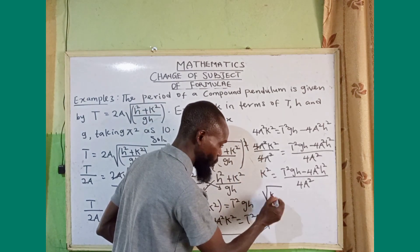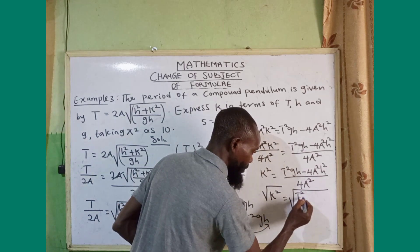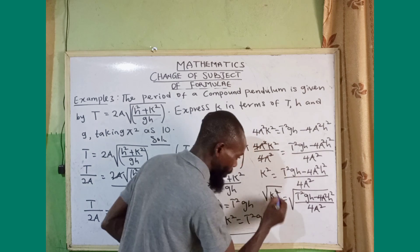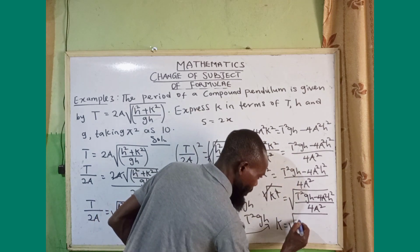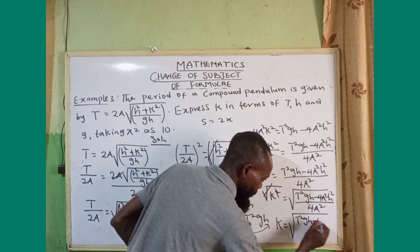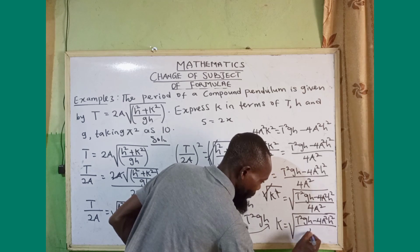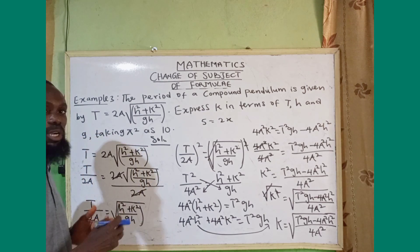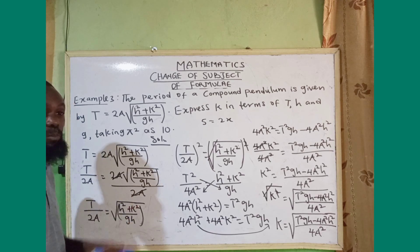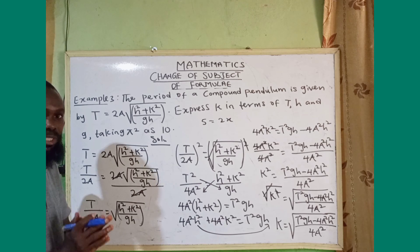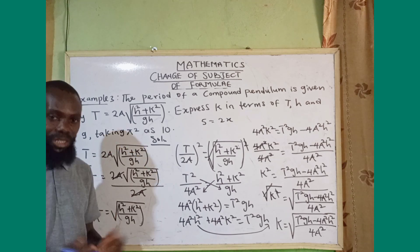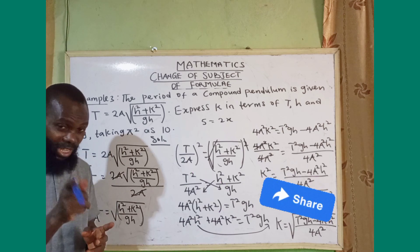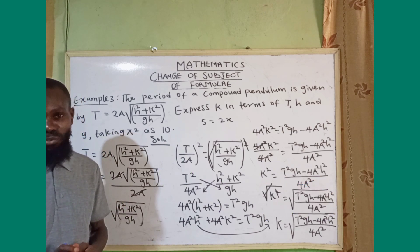Finally, to get k I take the square root of both sides. Square root of k squared equals square root of t squared gh minus 4π squared h squared divided by 4π squared. The square cancels the square root, giving k equals the square root of t squared gh minus 4π squared h squared all over 4π squared. This is the stepwise method for changing the subject of a formula. If you are new to this channel, subscribe and click the notification bell, and share with other students. Thank you.